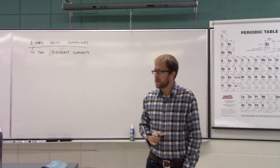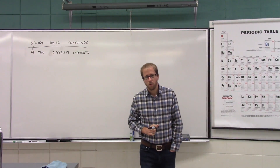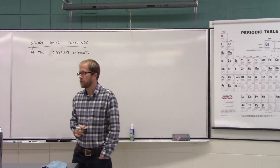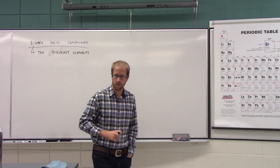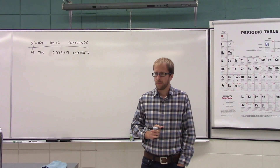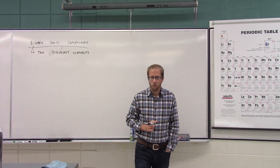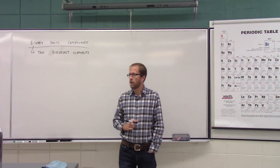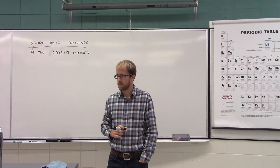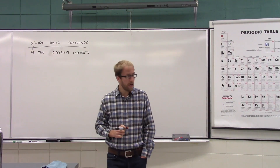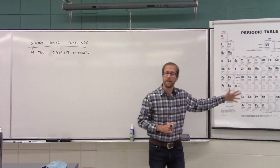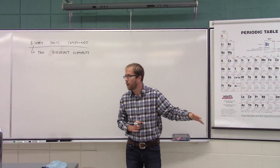Looking on your periodic table, which elements will form positively charged ions — which groups, which families will form cations? The alkaline metals is one. They have one electron; they want to lose that electron and get a full shell, so they become positive.